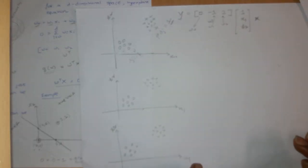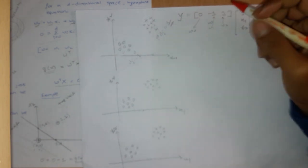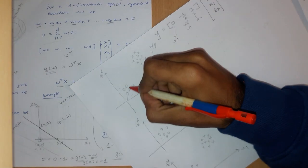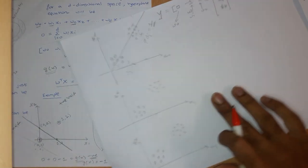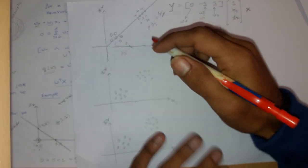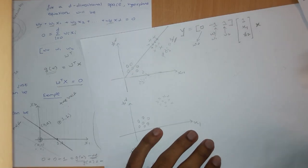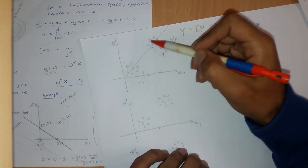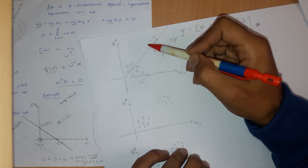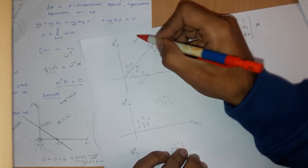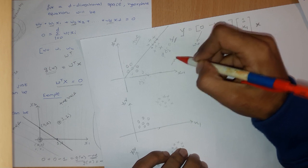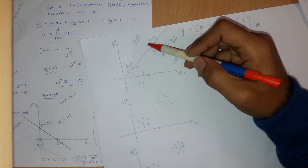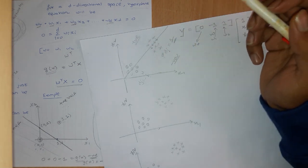Let us visualize the algorithm. Suppose we take some initial random weight vector, which gives us an initial line. What we do is check every input to see whether it lies in the positive half or the negative half of this line. Suppose this is the positive half and this is the negative half.